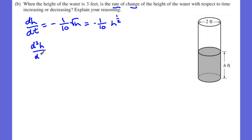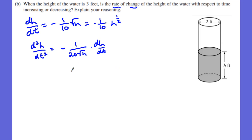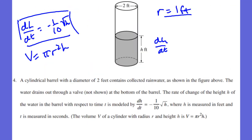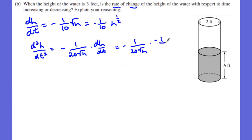We differentiate dH/dT = -1/10 · h^(1/2) with respect to time. The second derivative d²H/dT² equals -1/(20√h) · dH/dT, because implicitly we need to include that dH/dT chain rule factor. Substituting dH/dT = -1/10 √h, we get (-1/20√h) · (-1/10 √h). The √h terms cancel and the negatives cancel, leaving 1/200.